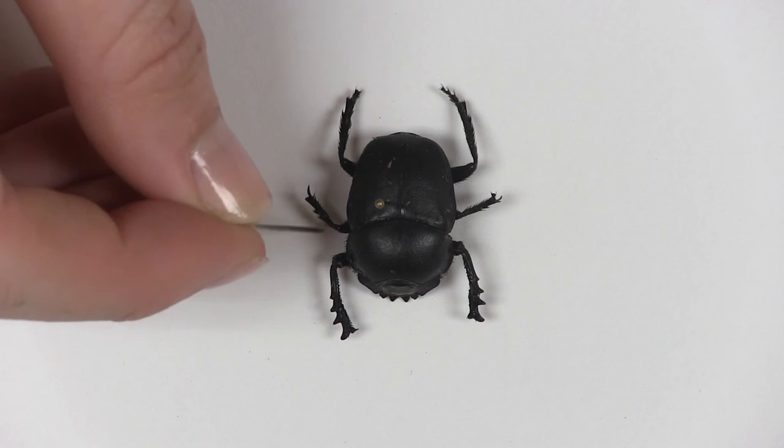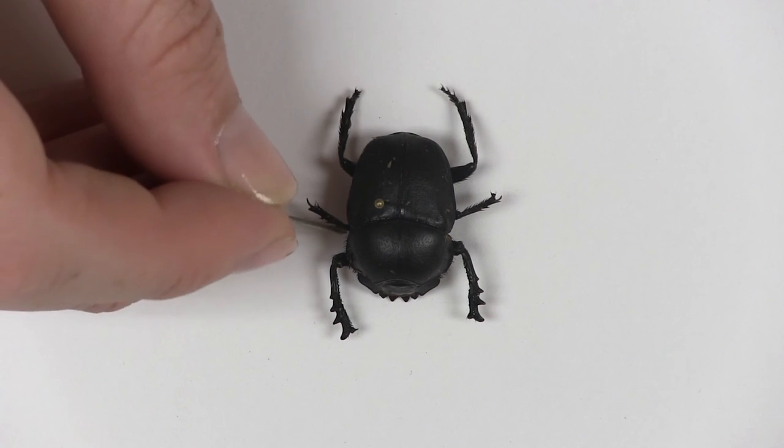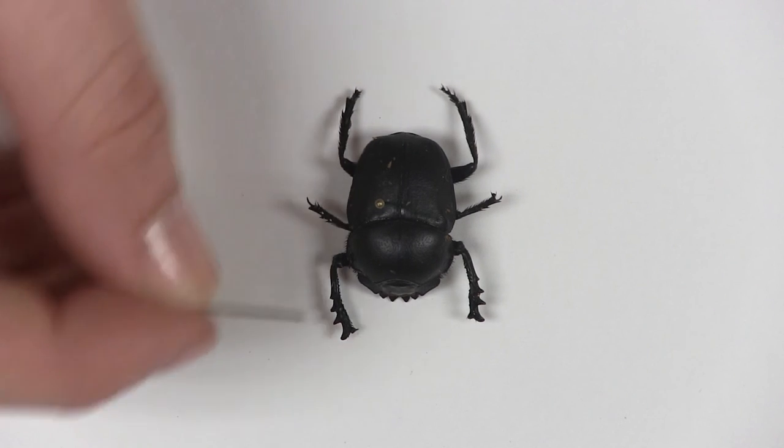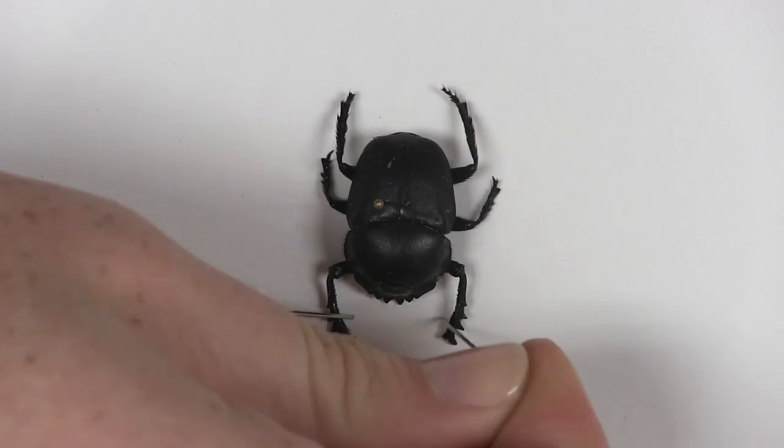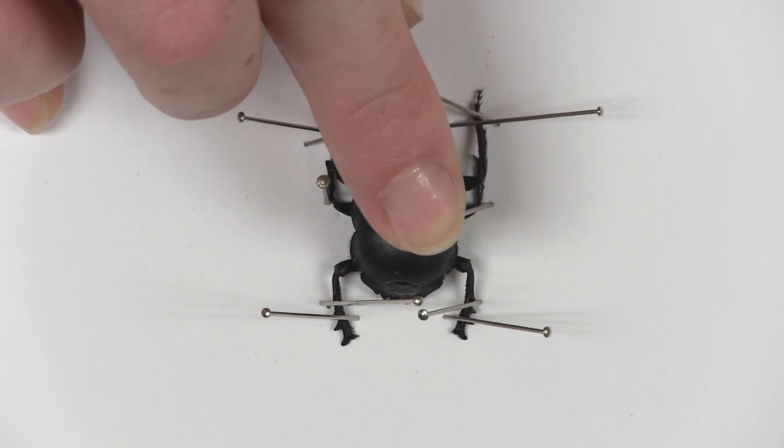Using a sharp instrument, adjust the position of the legs and antennae so that they are as symmetrical as possible and so all important features are easily visible. Use straight pins to secure the legs in the correct position.